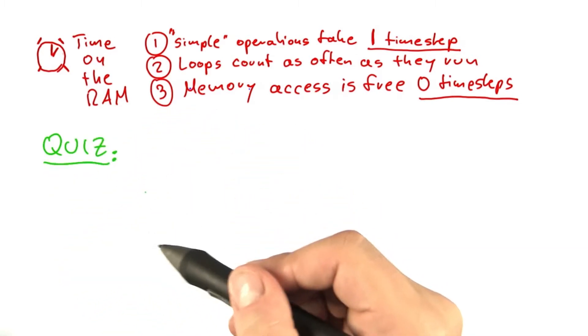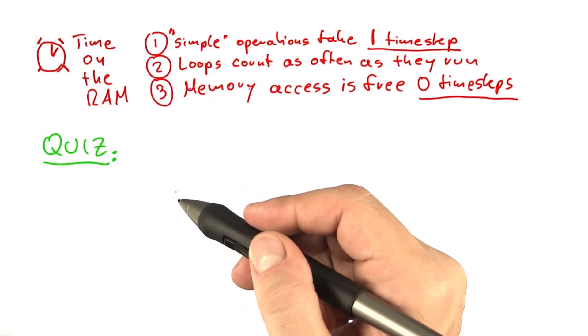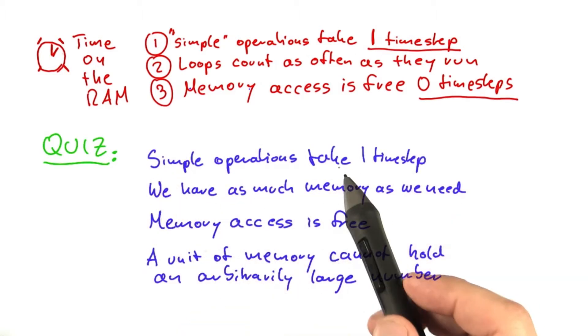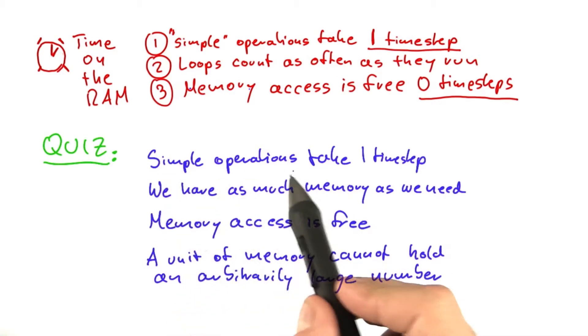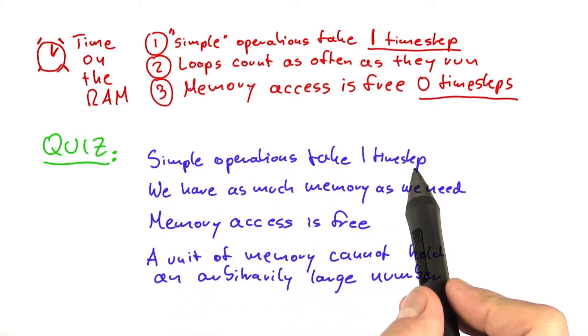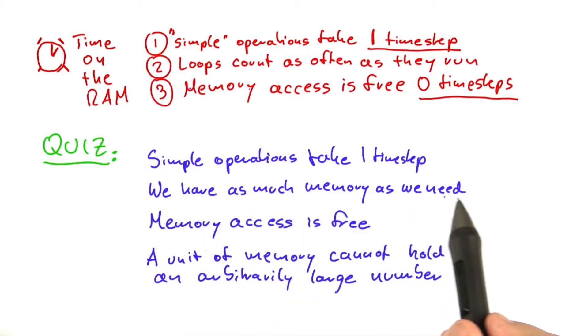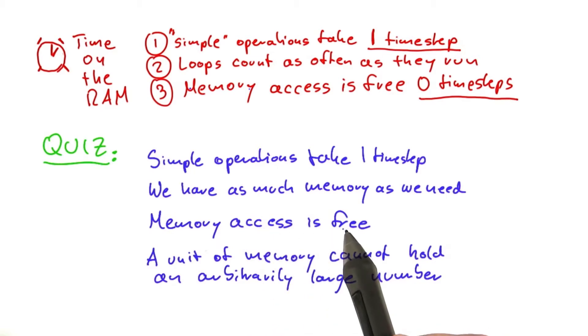Here are four main simplifications that the RAM is making. The first one is simple operations take only one time step. The second one is we assume that we have as much memory as we need. The third one is that memory access is considered to be free in terms of time. And the fourth one is that a unit of memory cannot hold an arbitrarily large number.